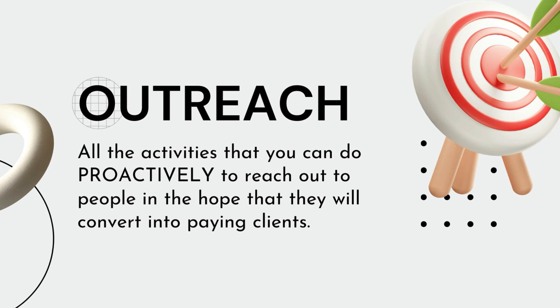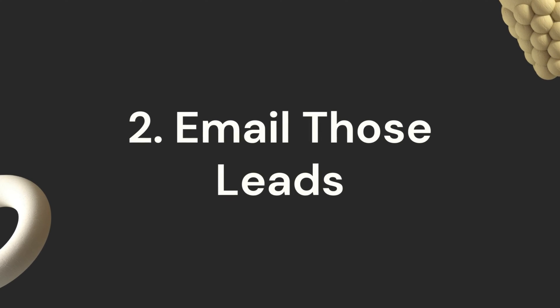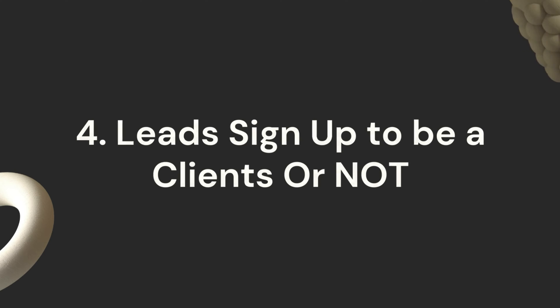The next method is outreach — all the activities you can do proactively to reach out to people in the hope that they will convert into a paying client. This includes cold email, cold outreach on social media, Google Maps, and Google Rankings. Cold email is a massive topic but I'm going to give you an 80/20 overview. Cold email is broken up into four sections: number one, an email list of your leads; number two, you email those leads; number three, you convince the lead to become a client; number four, the lead signs up or they do not.